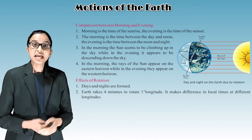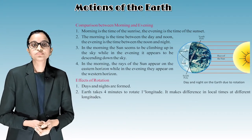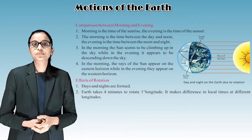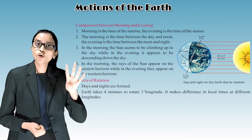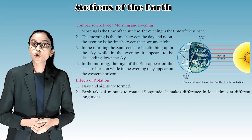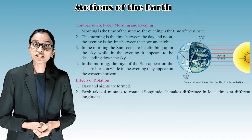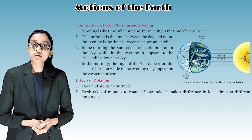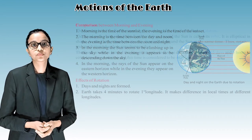Effects of rotation: First, day and night are formed. Second, the earth takes 4 minutes to rotate 1 degree of longitude, which makes a difference in local times at different longitudes.